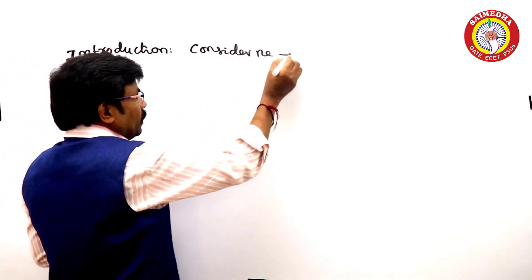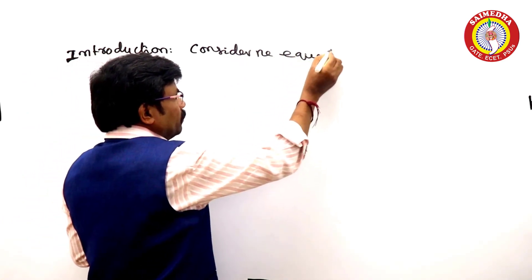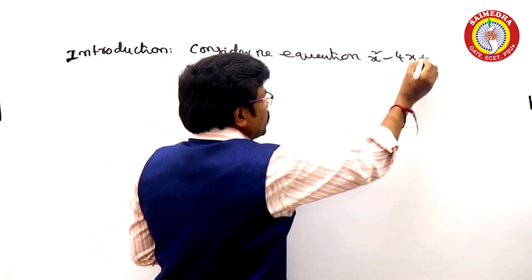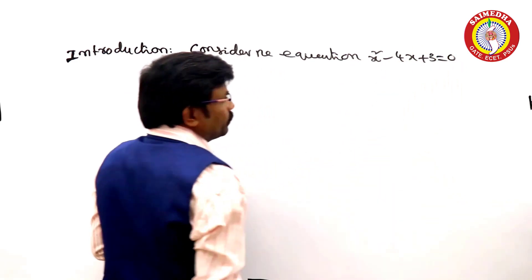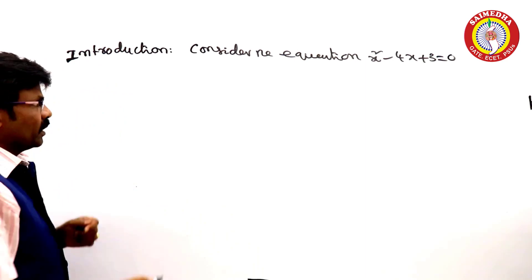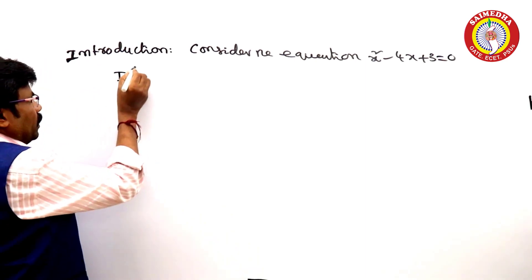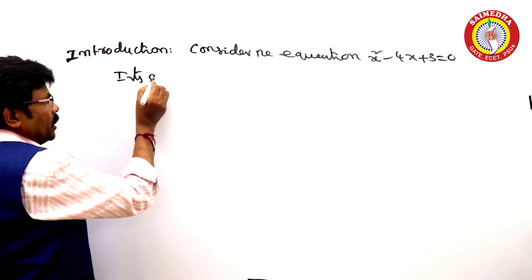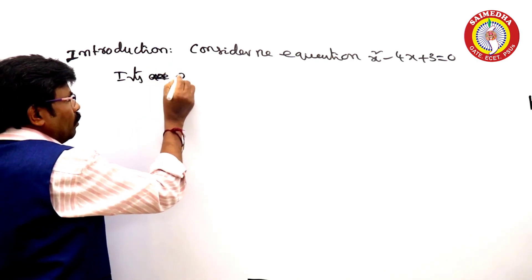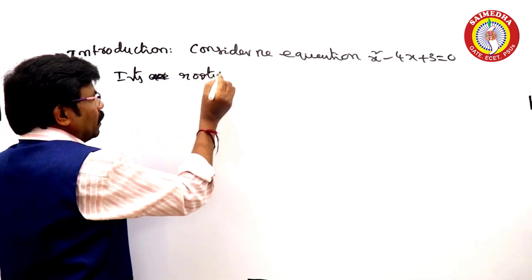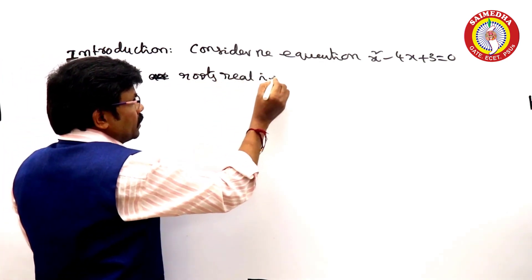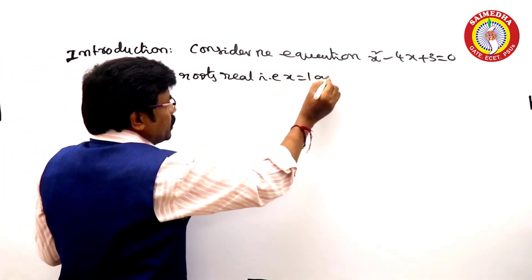Consider the equation x squared minus 4x plus 3 is equal to 0. Its roots are real. That is, x is equal to 1 and x is equal to 3.